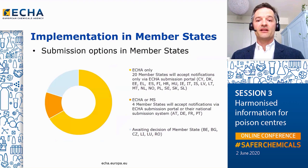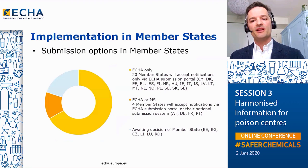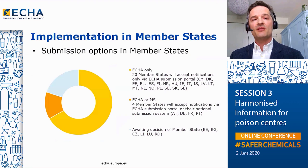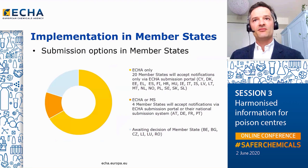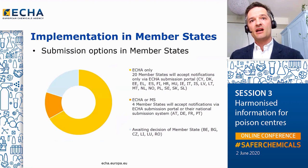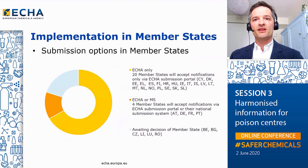We are compiling information on the implementation at the level of the member states. In this slide, you have information about the different submission options by member state. The vast majority of member states — 20 at this point in time — will accept notifications only through the ECHA submission portal. On the other hand, there are four member states which will accept notifications through the ECHA submission system but will also keep notifications through the national system in parallel. These four countries are Austria, Germany, France, and Portugal. We are still waiting for information from six member states, and as soon as we have it, we will publish it on our website.